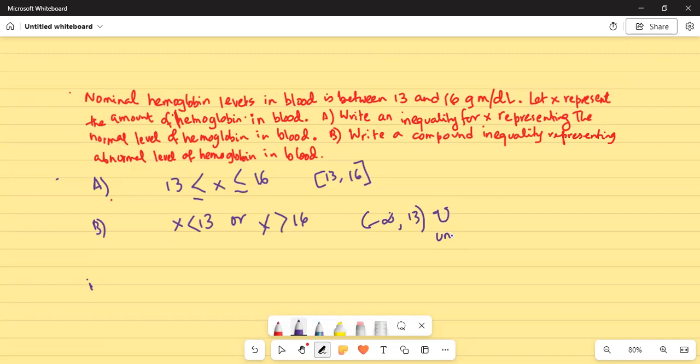This is union or then it is from 16 open bracket to positive infinity. These are abnormal levels of hemoglobin. So, this is the compound inequality that they are looking for. I will stop here today.